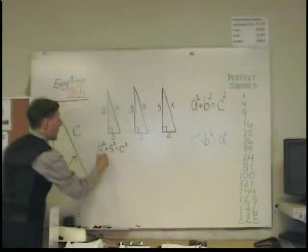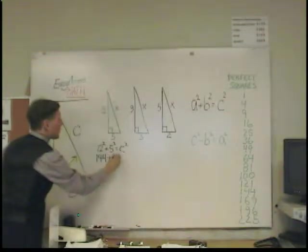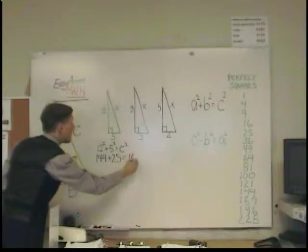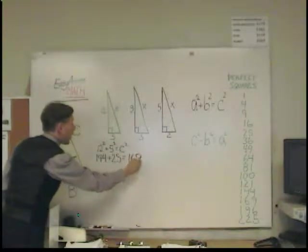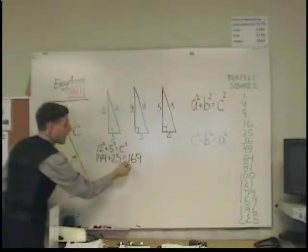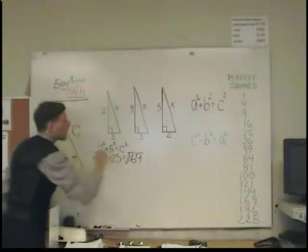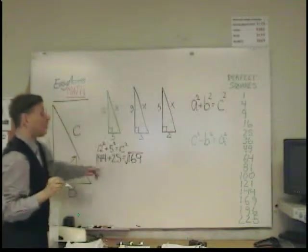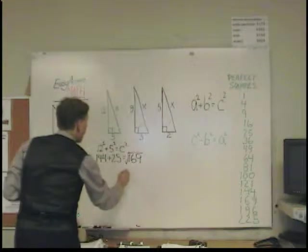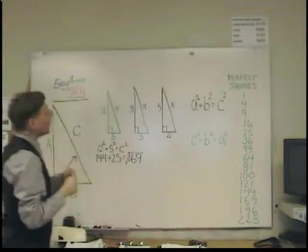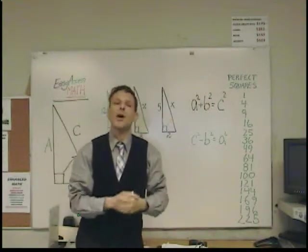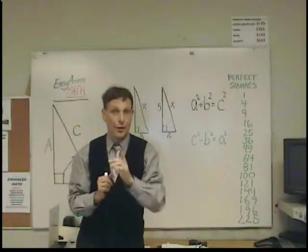So I square them out, I have 144 plus 25 equals 169. The final step, and don't forget this, is you take that answer and you square root it, since this would be C squared, and we're looking for C. So you square root that answer, and I wrote down the perfect squares. This list of numbers, these numbers, they're very important for you to know.